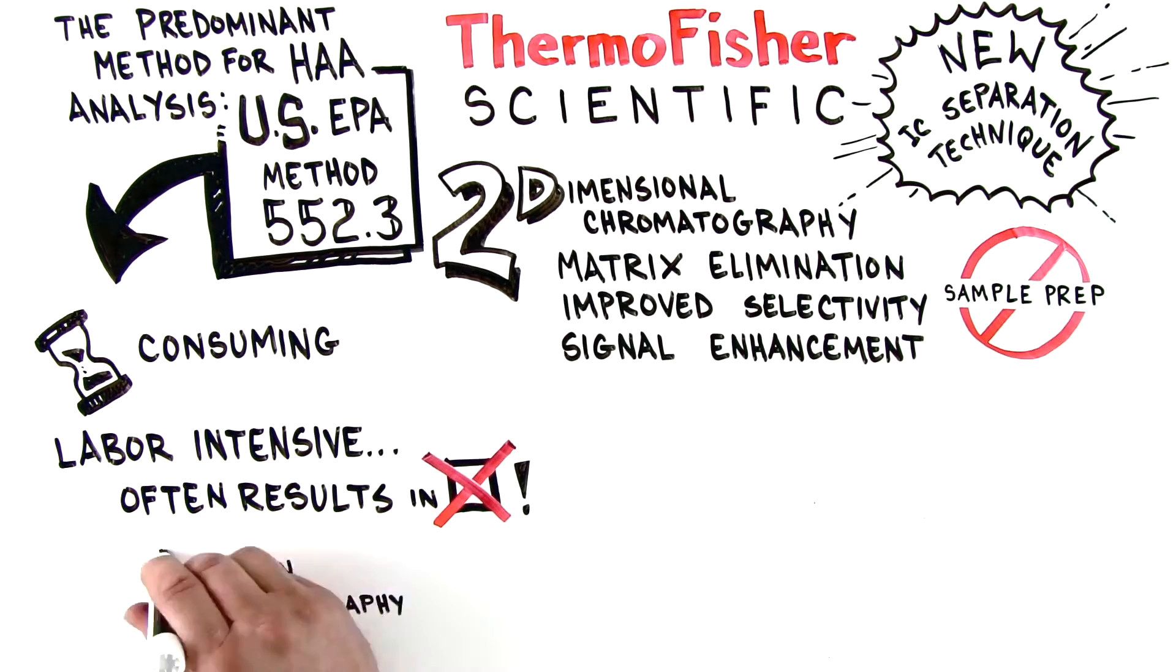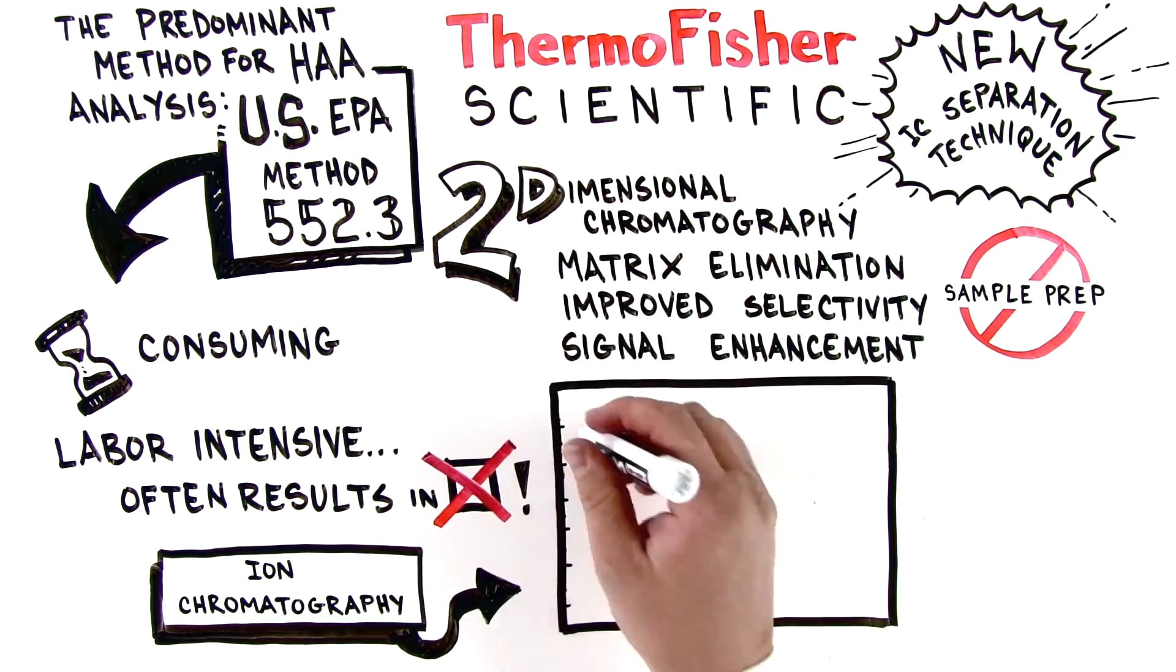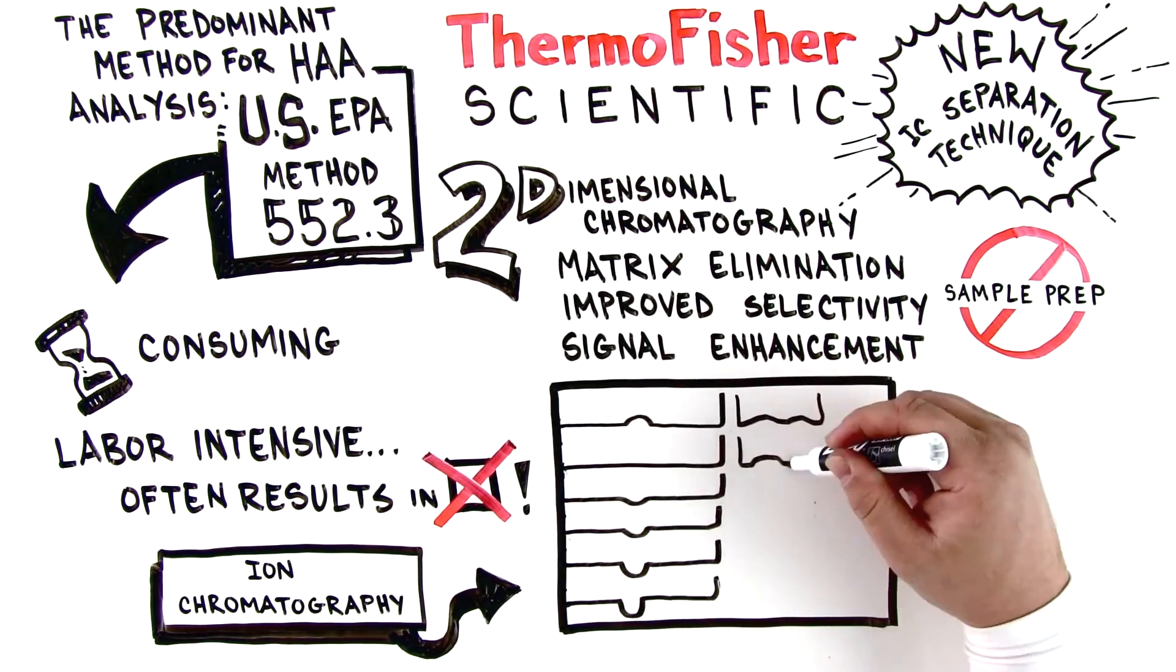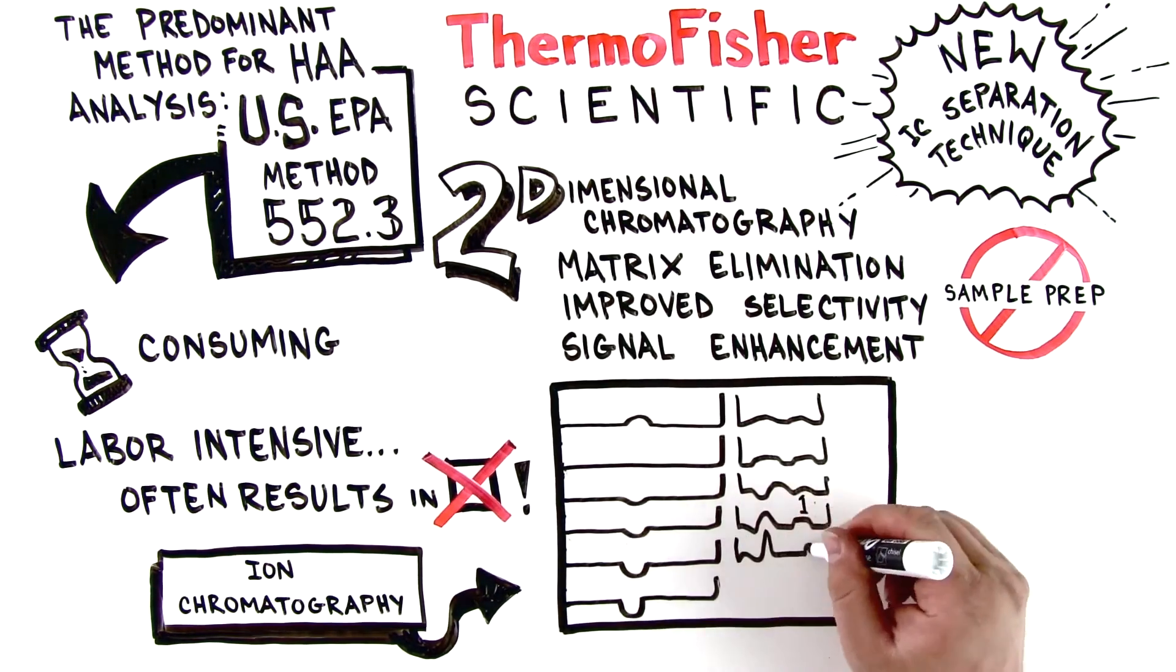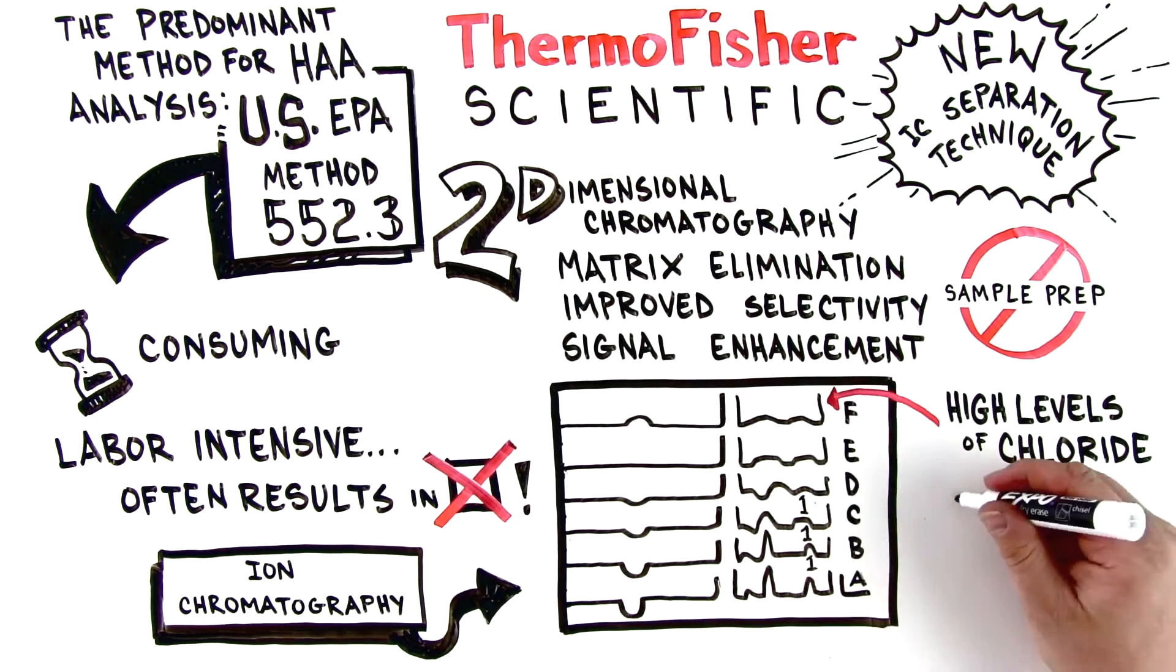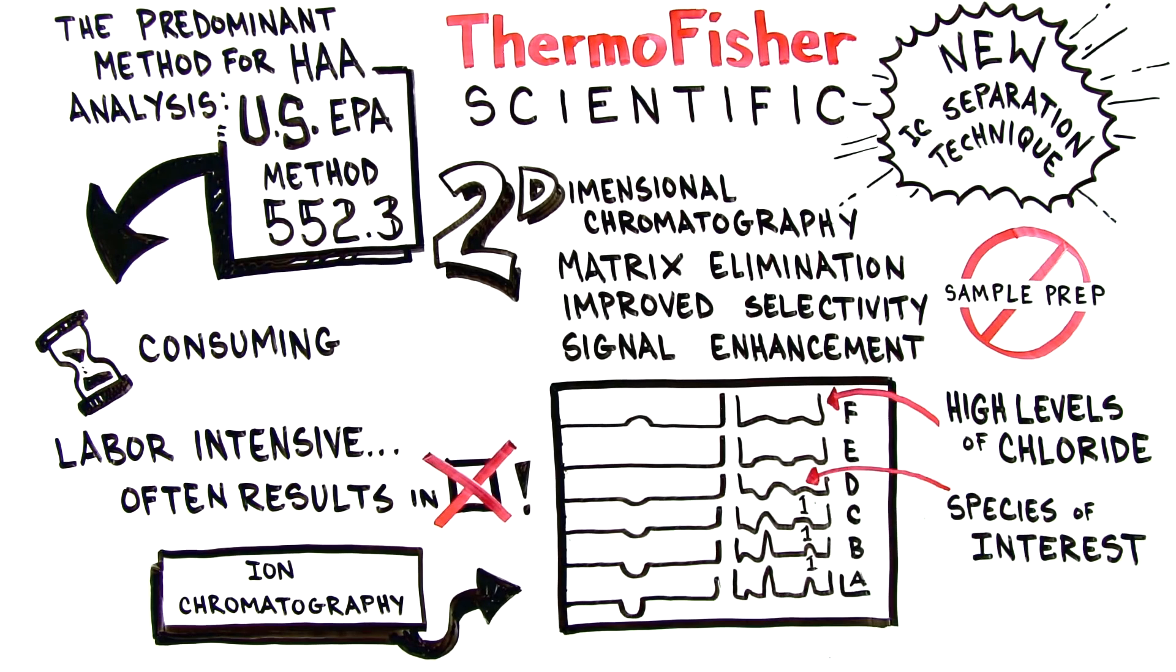When using ion chromatography, water samples with high levels of matrix ions in drinking and wastewater can interfere with trace contaminants analysis. This is because the matrix, such as high levels of chloride, elutes close to the peaks of interest, thus smearing the peak and increasing the band broadening, which causes recovery problems.